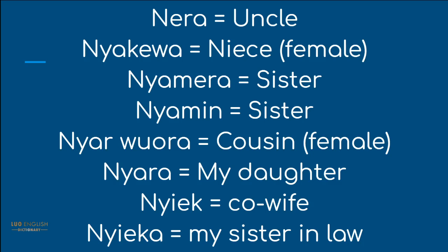Then we move on to Nera. Nera is uncle. Nyakewa is a niece. Then Nyamewa — sister. Nyamewa. Nyameen — that's also a sister.